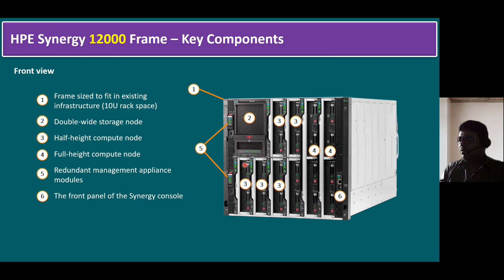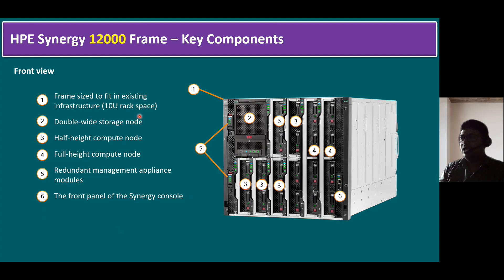All three half-size compute nodes each represent one server — you can install ESXi on one node dedicated to one hypervisor like VMware ESXi. There are scenarios where you can use a full-height compute node as well — that is the fourth component. The fifth is the redundant management appliance module, which helps you control compute and storage nodes. The sixth point is the front panel of the Synergy console. These are the high-level components of the HPE Synergy 12,000 frame.